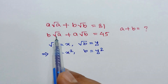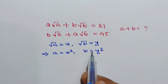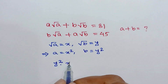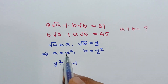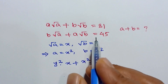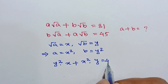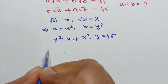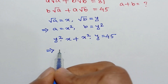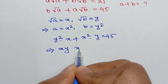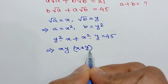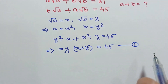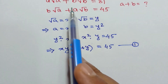Substituting these values in the second equation, we will have y squared times x plus x squared times y is equal to 45. Taking xy common, we get xy times (x plus y) is equal to 45. Call this equation number 1.